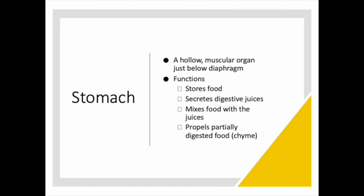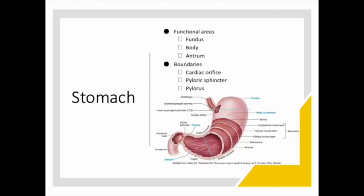Now we have food in the stomach. The stomach is a hollow muscular organ lying just below our diaphragm. Its job is to store food while we eat, secrete digestive juices, mix food with those juices, and propel partially digested particles — called chyme — into the duodenum of the small intestines. In terms of functional areas, we refer to the upper portion as the fundus, the middle as the body, and the lower as the antrum. The major anatomic boundaries include the lower esophageal sphincter at the gastroesophageal junction and the pyloric sphincter at the gastroduodenal junction.